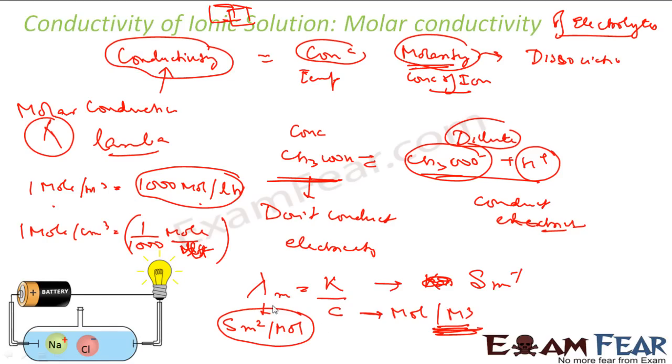So lambda m is my molar conductivity. The normal unit is siemens meter square per mole, but siemens centimeter square per mole is also used, where I give the conductivity in siemens per centimeter and the concentration also in moles per centimeter cube. But this is my SI unit. I am repeating once again - this is not in moles per liter, it is either in moles per centimeter cube or moles per meter cube.